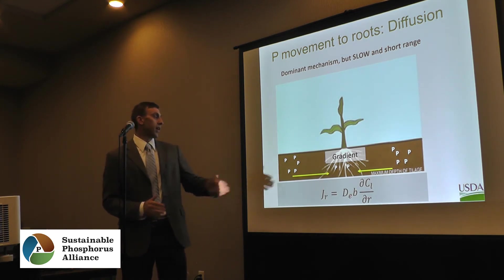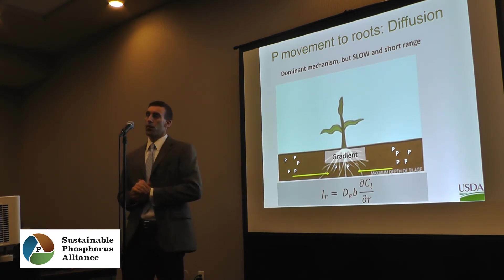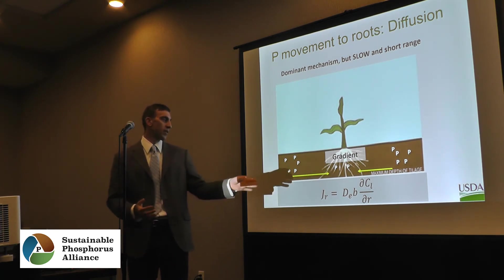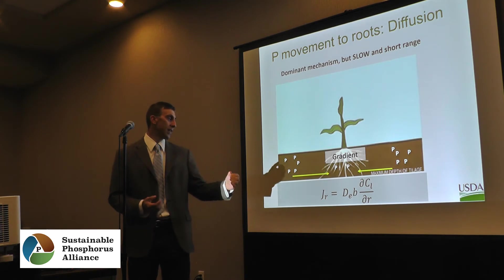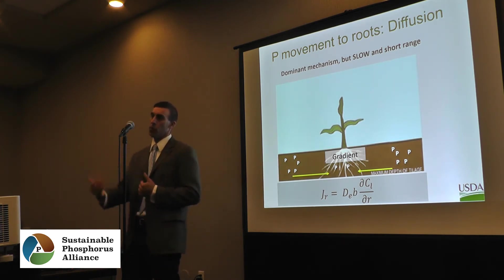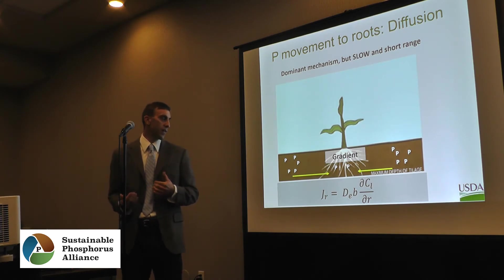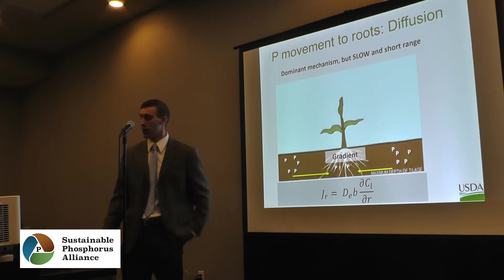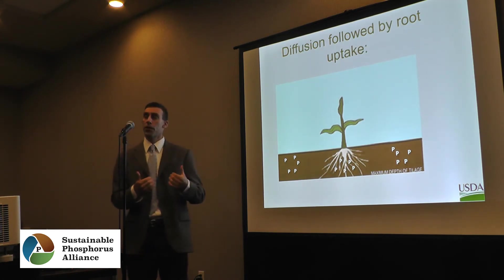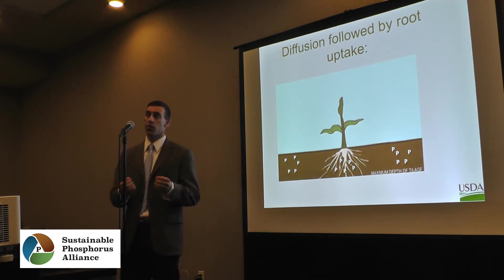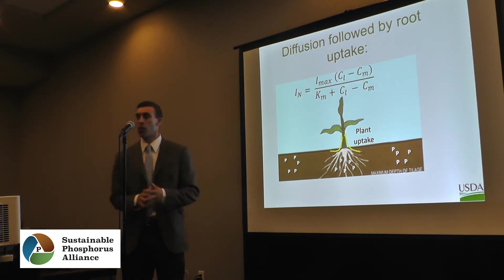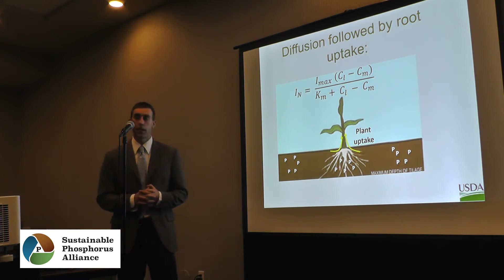Diffusion works by concentration gradient: if you have a lower concentration near plant roots and higher concentration outside, that gradient drives phosphorus toward the roots — though this only occurs on a scale of millimeters. It is the dominant mechanism but very slow and short-range. We can describe this mathematically by combining Fick's law with other parameters: it's a function of the concentration gradient, the distance, the buffer capacity of the soil, and the diffusion coefficient of phosphorus in water.